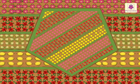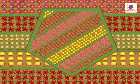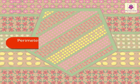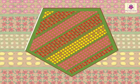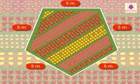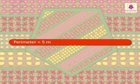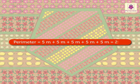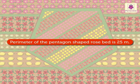Can you see a rose bed? It is pentagon in shape. Let's find its perimeter. We know that perimeter is equal to the sum of the lengths of all sides of a closed figure. Here, each side of the pentagon is 5 meters in length. So, perimeter is equal to 5 meters plus 5 meters plus 5 meters plus 5 meters plus 5 meters, which is equal to 25 meters. Thus, the perimeter of the rose bed is 25 meters.